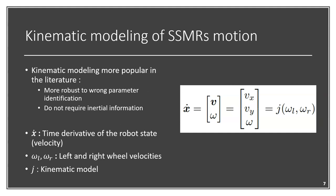Now, why do we want to use kinematic modeling for skid-steering mobile robots as opposed to dynamic modeling? In the literature, kinematic modeling tends to be more popular for two main reasons. The first one being that they are more robust to wrong parameter identification, and the second being that they do not require any knowledge about the inertial information of the robot's body, which is not always easy to find from the manufacturer.